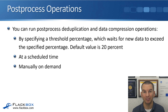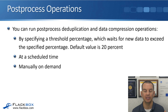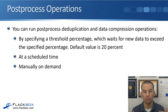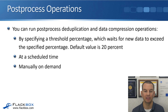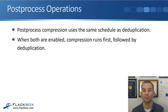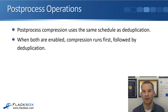You can run post-process deduplication and data compression operations by specifying a threshold percentage, which waits for new data to exceed the specified percentage — the default value is 20%. So after 20% new data is written to the volume since the last operation, it will run again. You can also enable this on FAS systems. Another way to run scans is at a scheduled time, and you can also set a maximum time period for the scan to run in. Finally, you can run the operations manually on demand for your deduplication and compression. Post-process compression uses the same schedule as deduplication — this is why you have to enable deduplication first before enabling compression. When both are enabled, compression runs first, followed by deduplication.